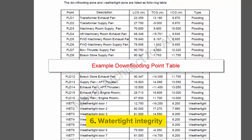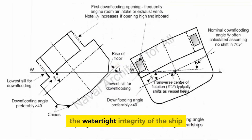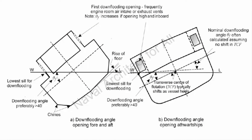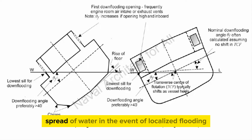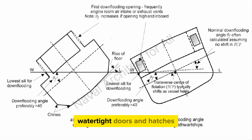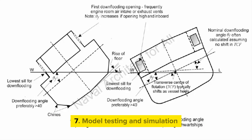6. Watertight Integrity. Emphasis is placed on the watertight integrity of the ship. Bulkheads and compartments are designed to prevent the rapid spread of water in the event of localized flooding. Watertight doors and hatches are important elements in maintaining stability.